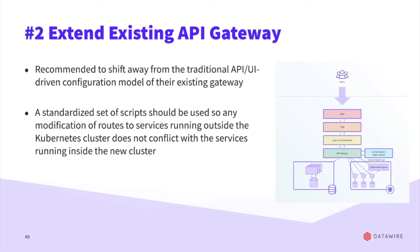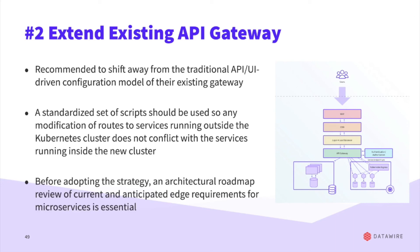We recommend shifting away from the traditional UI-driven configuration model as much as possible and pushing toward self-service Kubernetes YAML configuration. You need a standardized way of updating the API gateway that doesn't conflict with what's being specified in Kubernetes — we've seen gnarly bugs with route overlaps and protocol conflicts. Before adopting this strategy, look at your architectural roadmap. We've seen folks committing extra code into their existing API gateway, not realizing that more microservices, Function as a Service, or cloud migrations are coming, leading to a sunk-cost fallacy situation where the gateway isn't fit for purpose as you adopt more cloud-native ways of working.